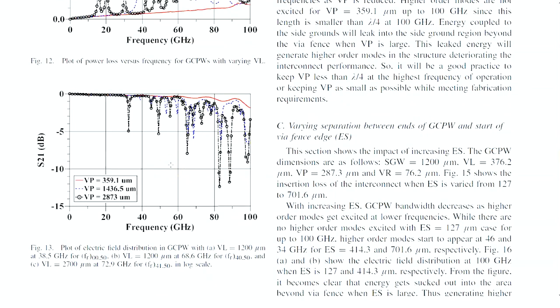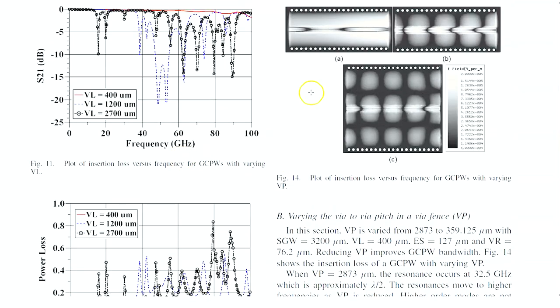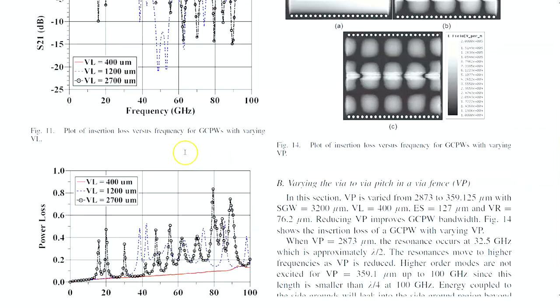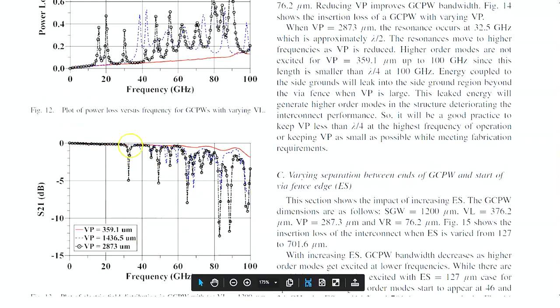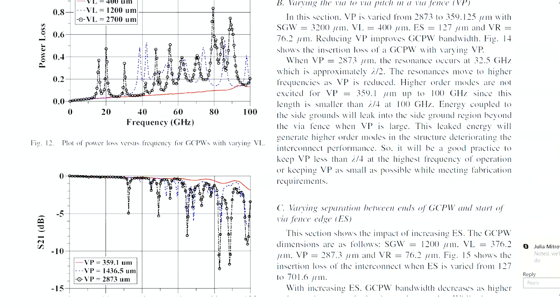The other important parameter here is the via pitch, VP. So this is the separation horizontally between neighboring vias. The other constraint here beyond just what bandwidth do I need is the manufacturability. But for the moment, we actually see similar results. As we make the via separation larger, you can see that these dips in the insertion loss plot move to lower and lower frequencies.